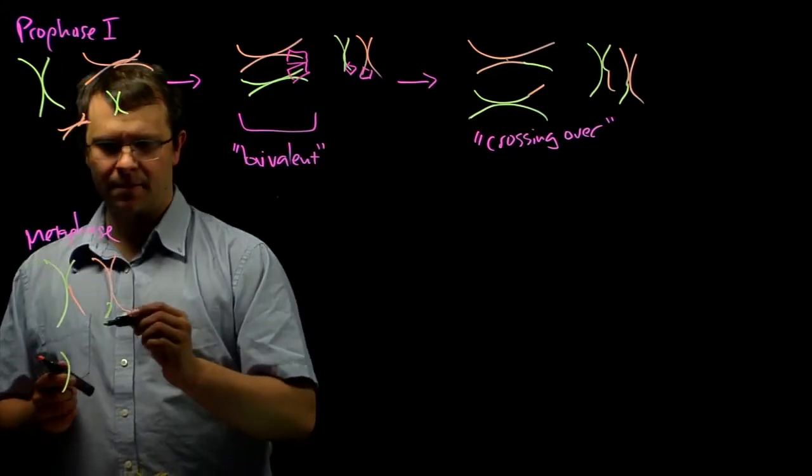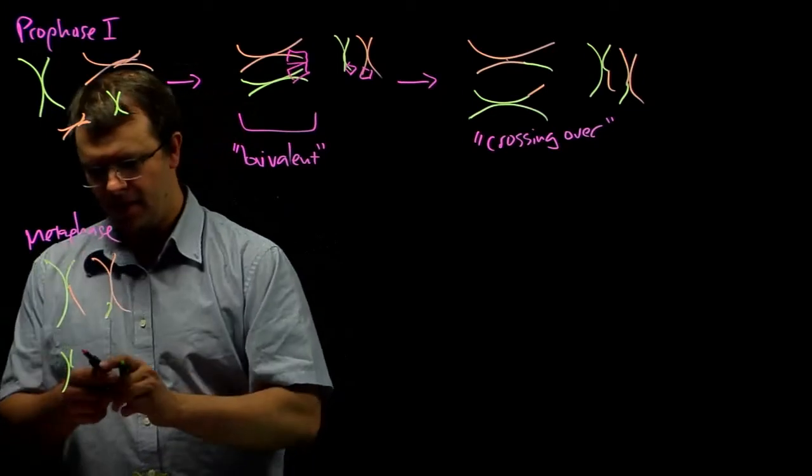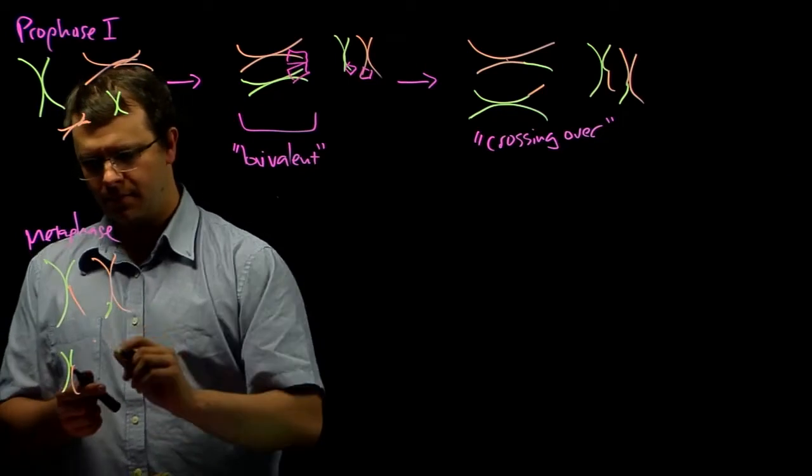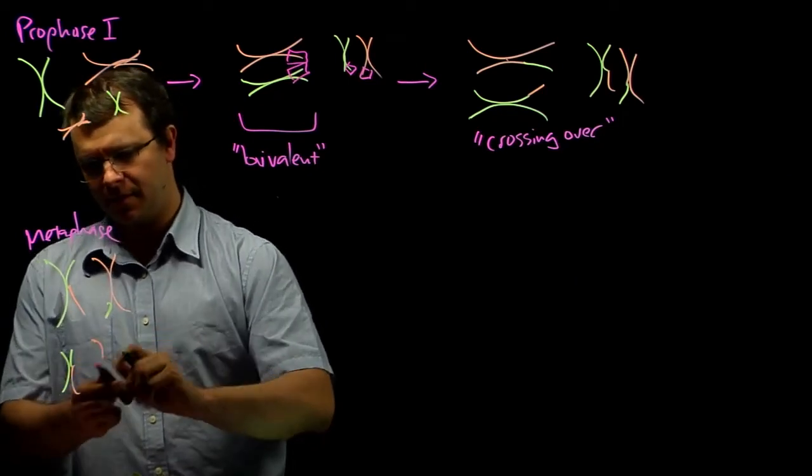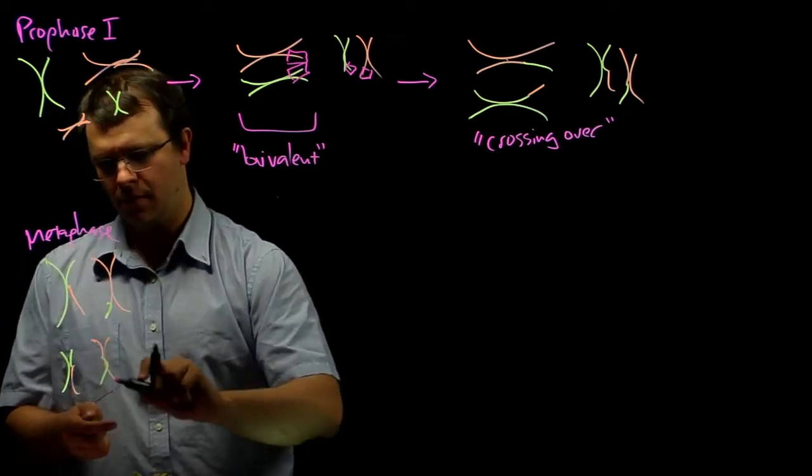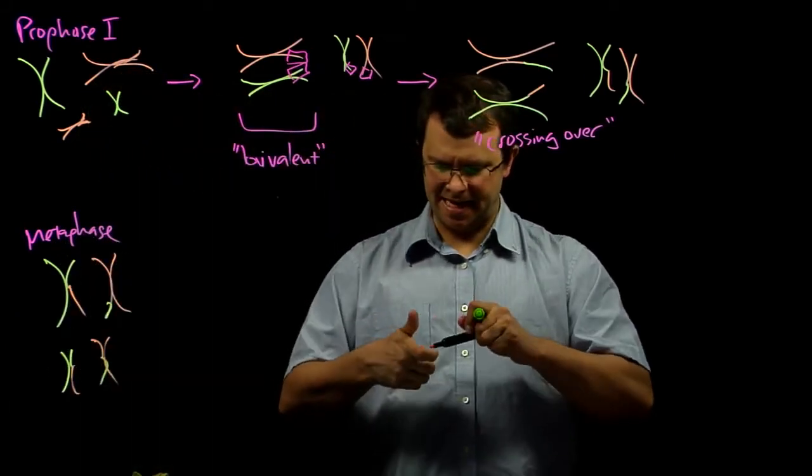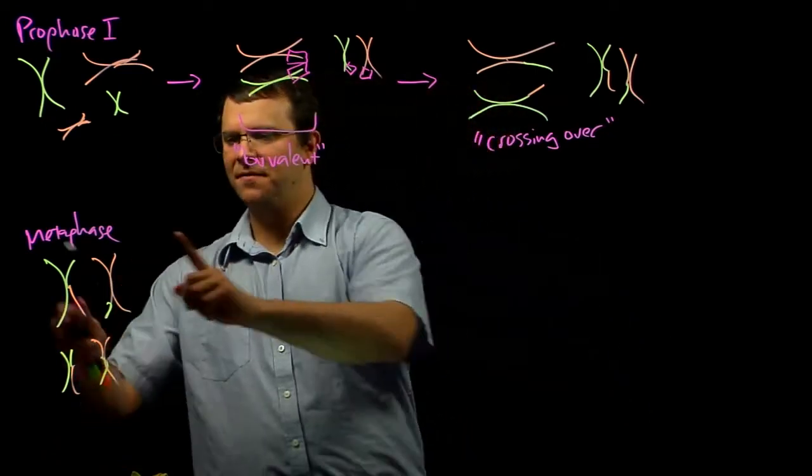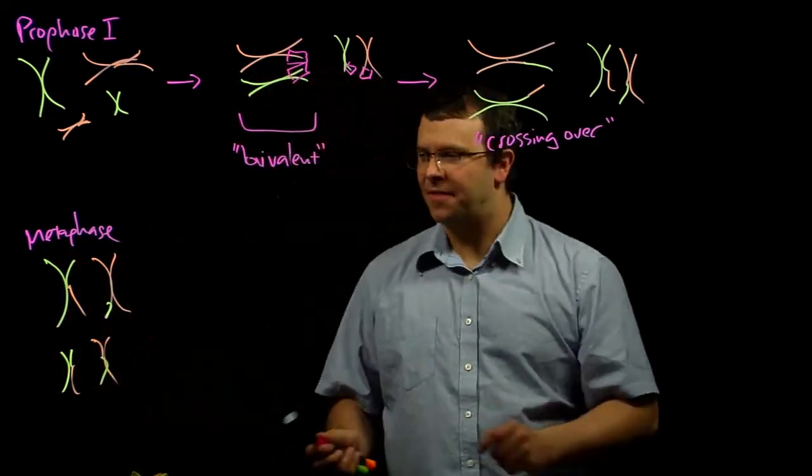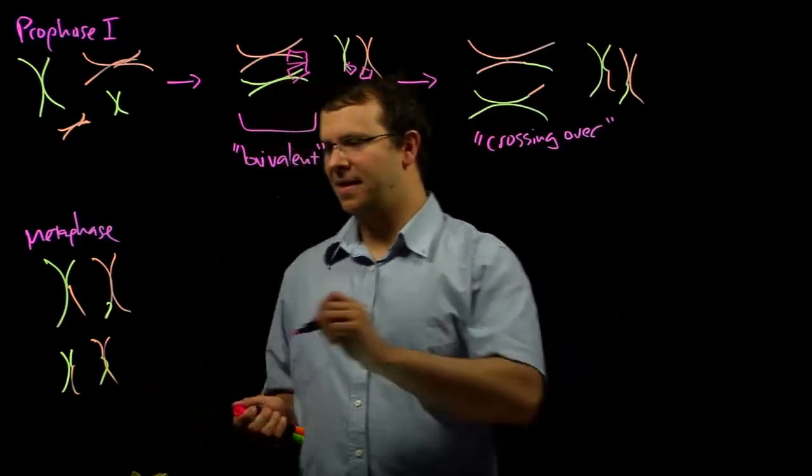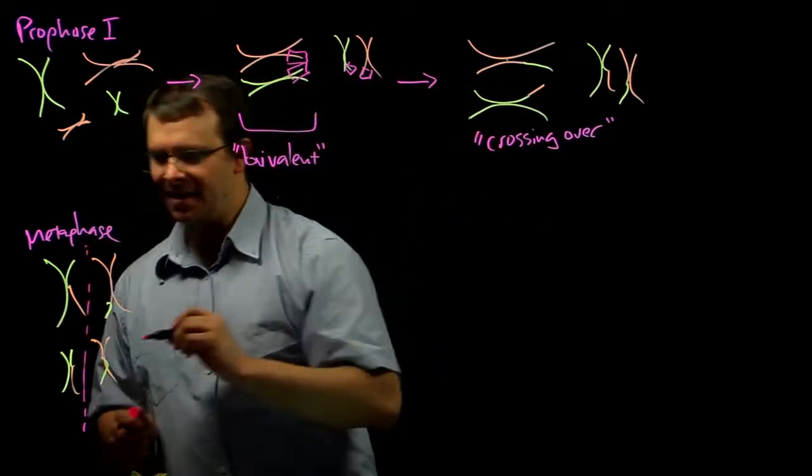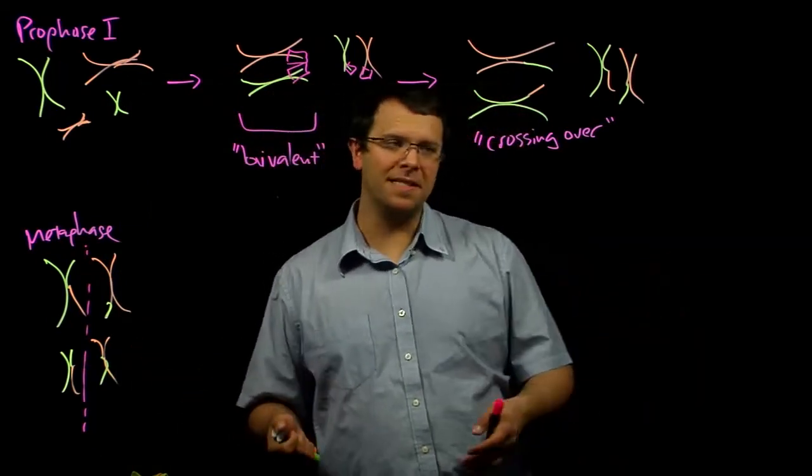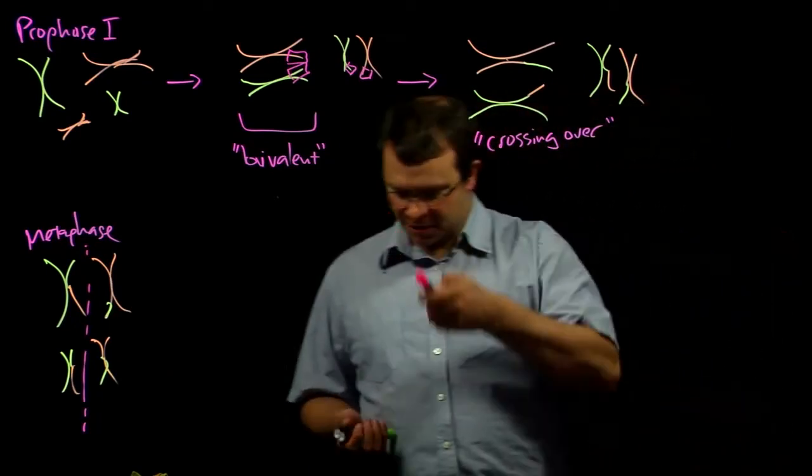instead what happens is that bivalents line up. Pairs of homologous chromosomes stay together. And so they're still all lined up down the center of the cell. We still call it a kind of down the metaphase plate down the center of the cell.